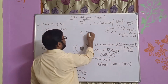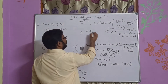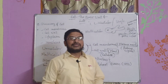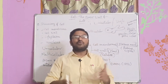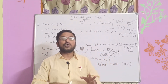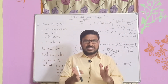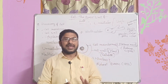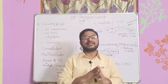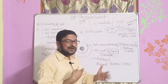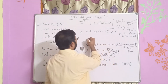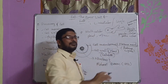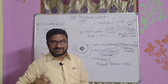Multicellular organisms are those that contain more than one cell. Multi means many — more than one cell. Organisms such as all plants and animals are multicellular organisms, with many cells present in them.